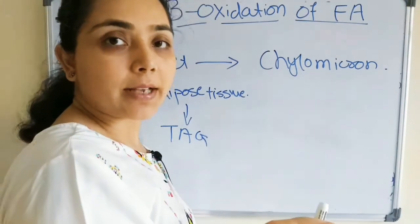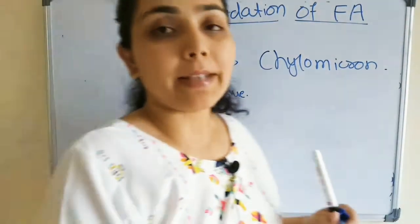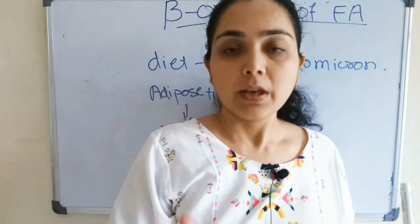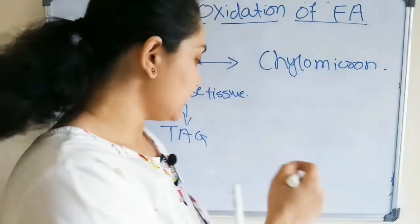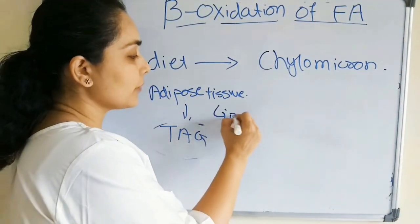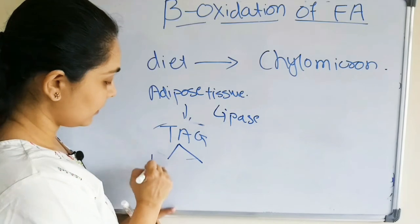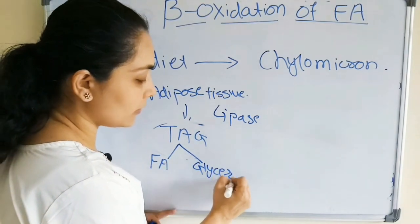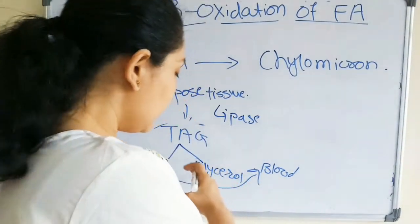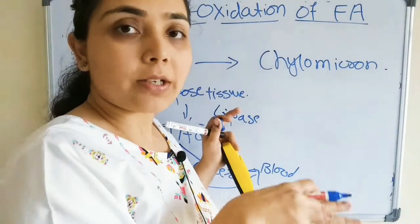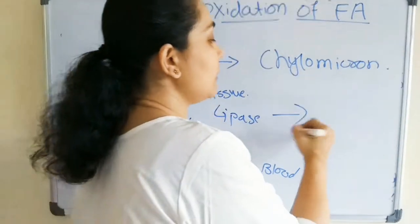In the adipose tissue, hormone-sensitive lipases are present. When the blood glucose level goes down, hormones like glucagon and epinephrine are secreted, which give signals to activate protein kinases. These protein kinases then activate the hormone-sensitive lipases, which break down the triacylglycerol into fatty acid and glycerol. This comes out into the circulatory system, and the fatty acid is transported in the blood via serum albumin.